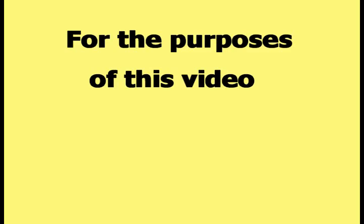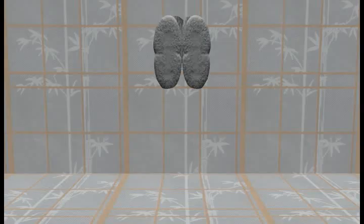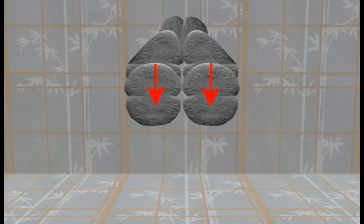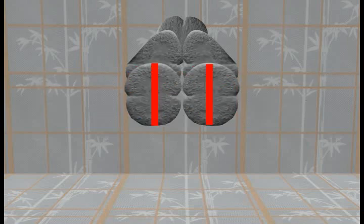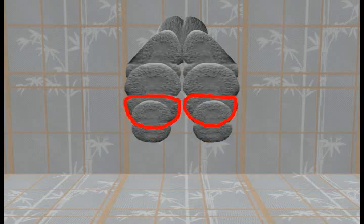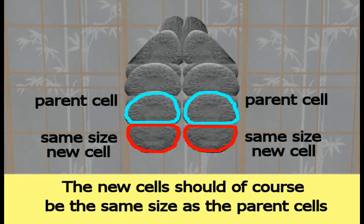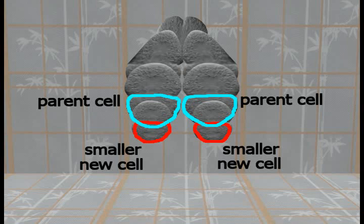For the purposes of this video, these two new cells are going to be resized and moved as shown in this picture. This new pair of cells then divides downwards, remaining the same size and aligned with the parent cells. The dividing process continues with two new smaller cells dividing downwards from the larger parent cells. The new cells are smaller than the parent cells only to make the idea presented in this video more clear, since cell division normally produces an identical cell.